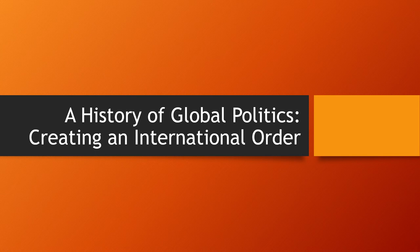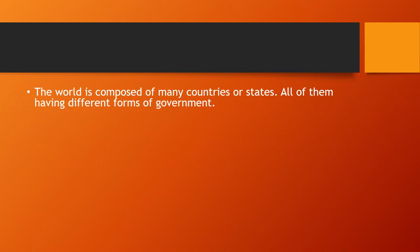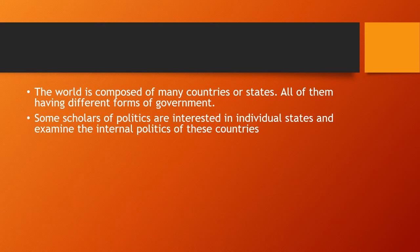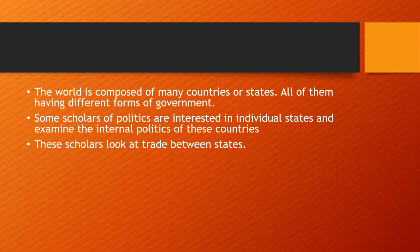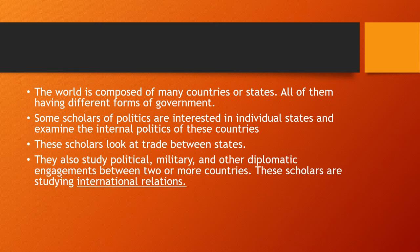A History of Global Politics: Creating an International Order. The world is composed of many countries or states, all of them having different forms of government. Some scholars of politics are interested in individual states and examine the internal politics of these countries. These scholars look at trade between states. They also study political, military, and other diplomatic engagements between two or more countries. These scholars are studying international relations.